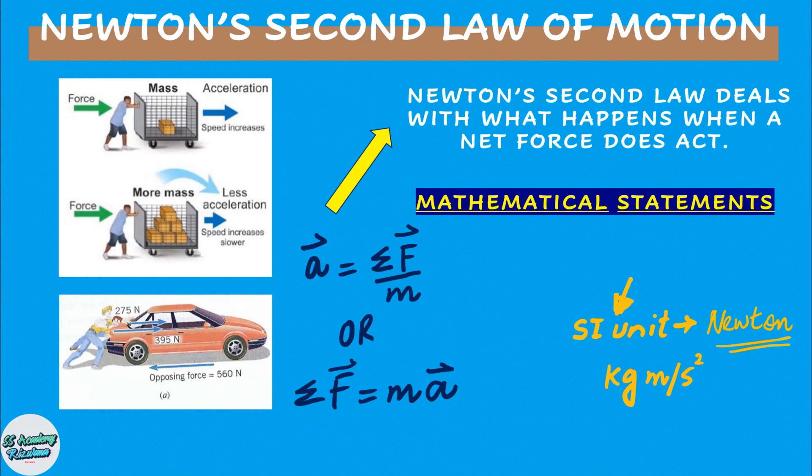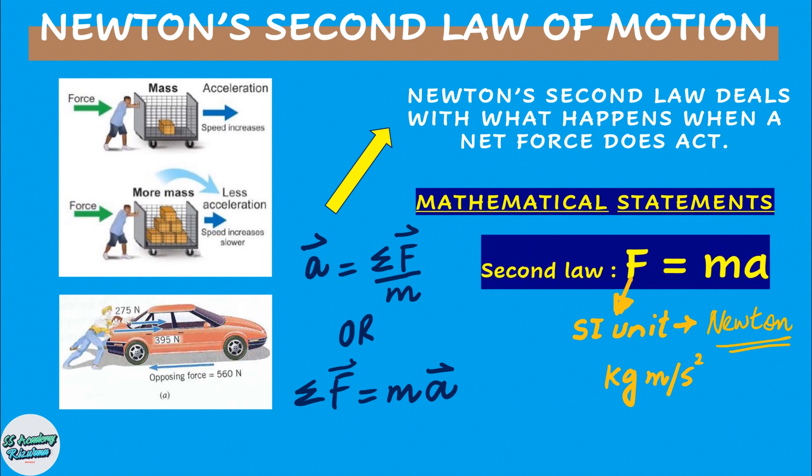Newton's second law of motion states that when a net external force sigma F acts on an object of mass m, the acceleration a that results is directly proportional to the net force and has a magnitude that is inversely proportional to the mass. The direction of the acceleration is the same as the direction of the net force, or sigma F equals m times a.